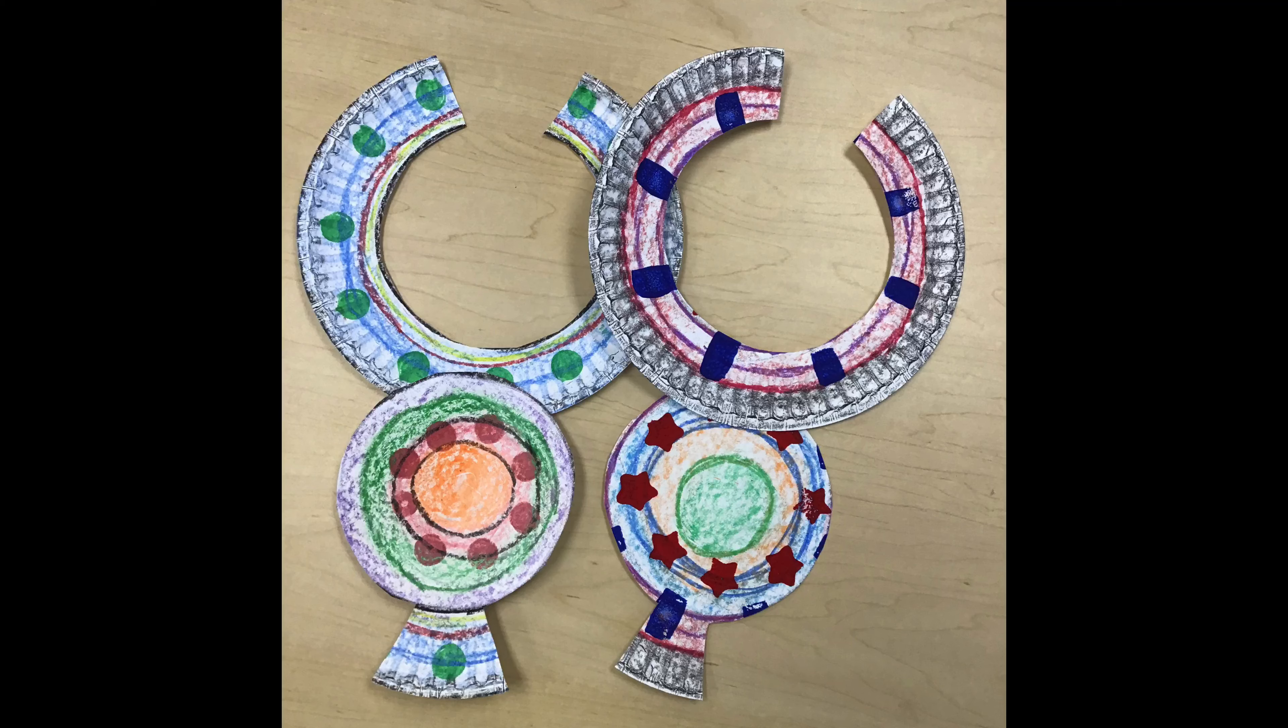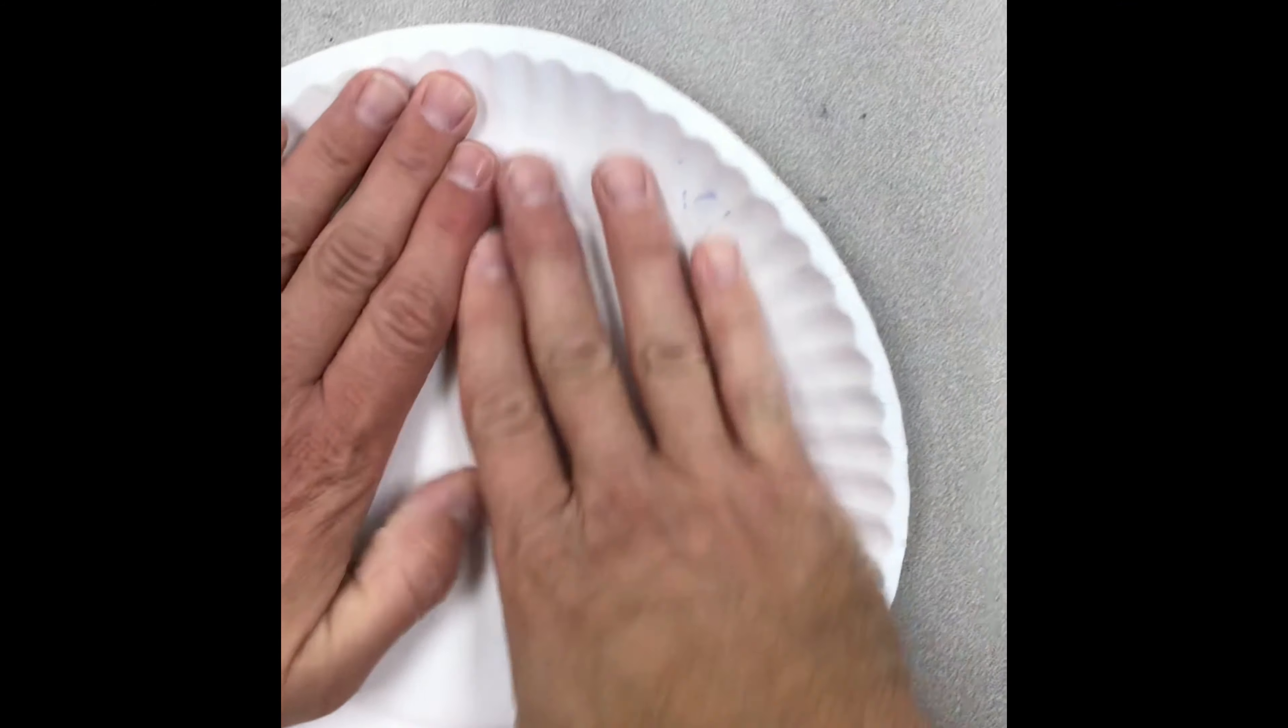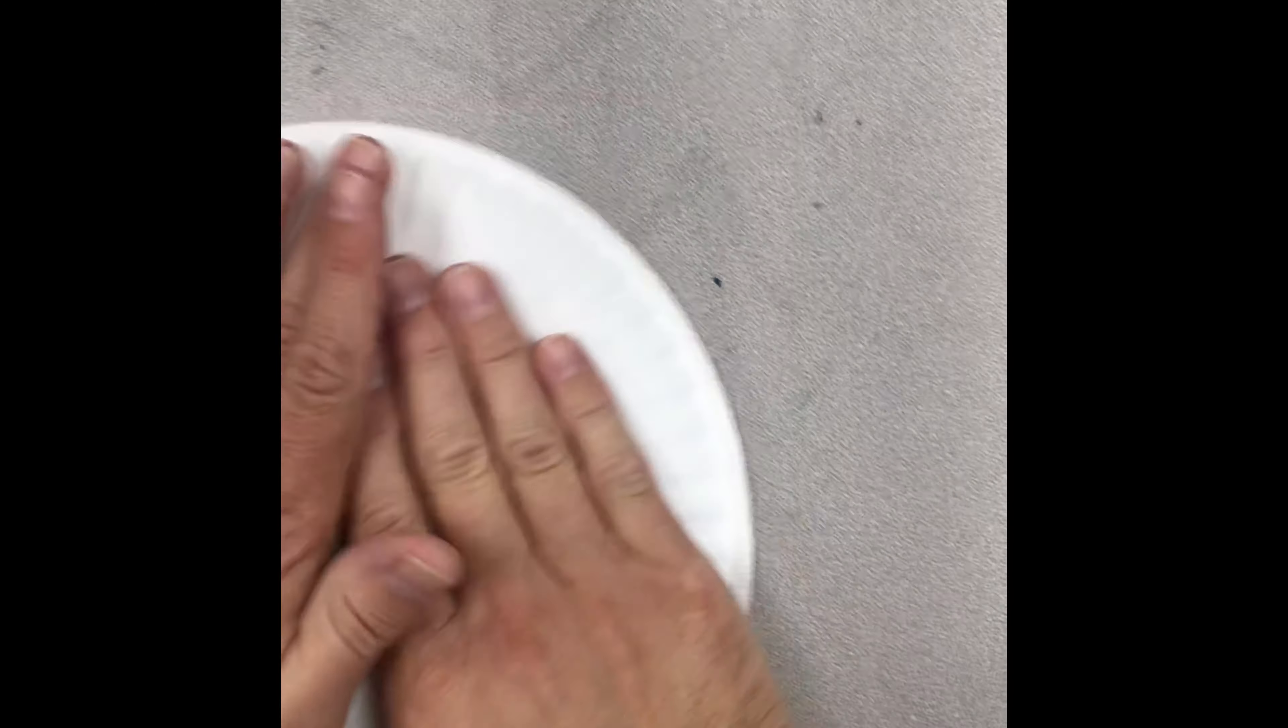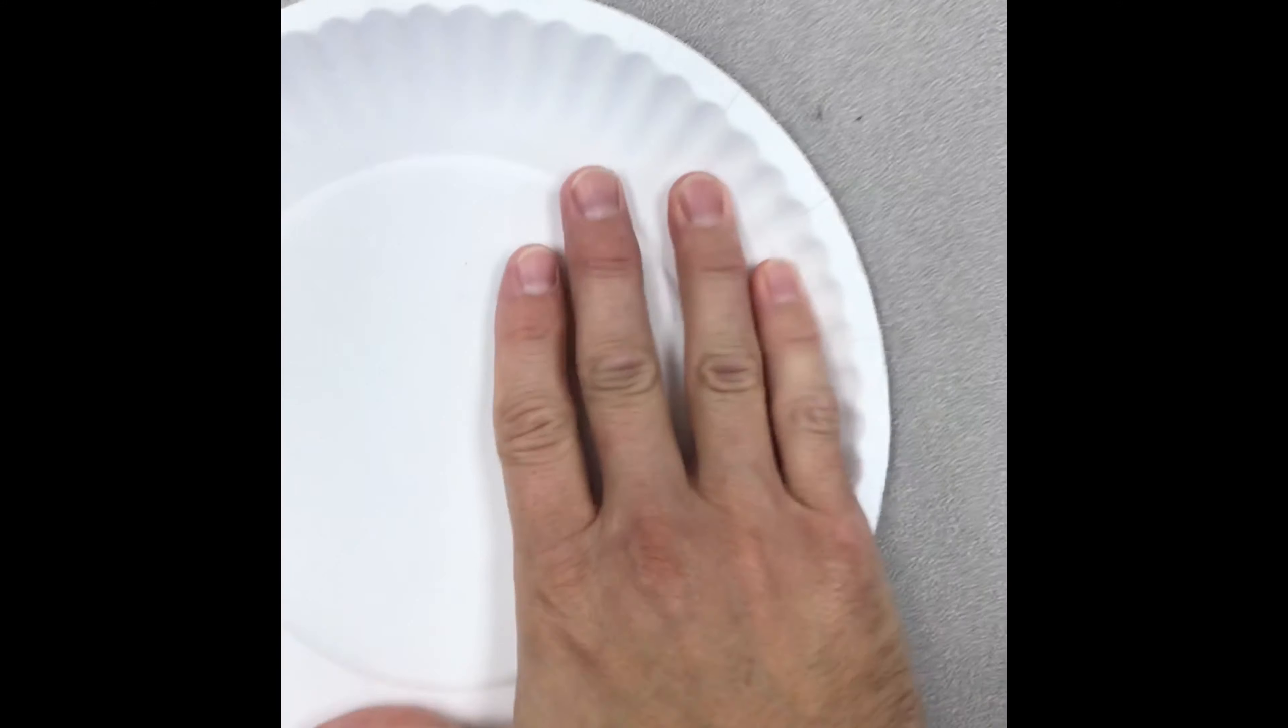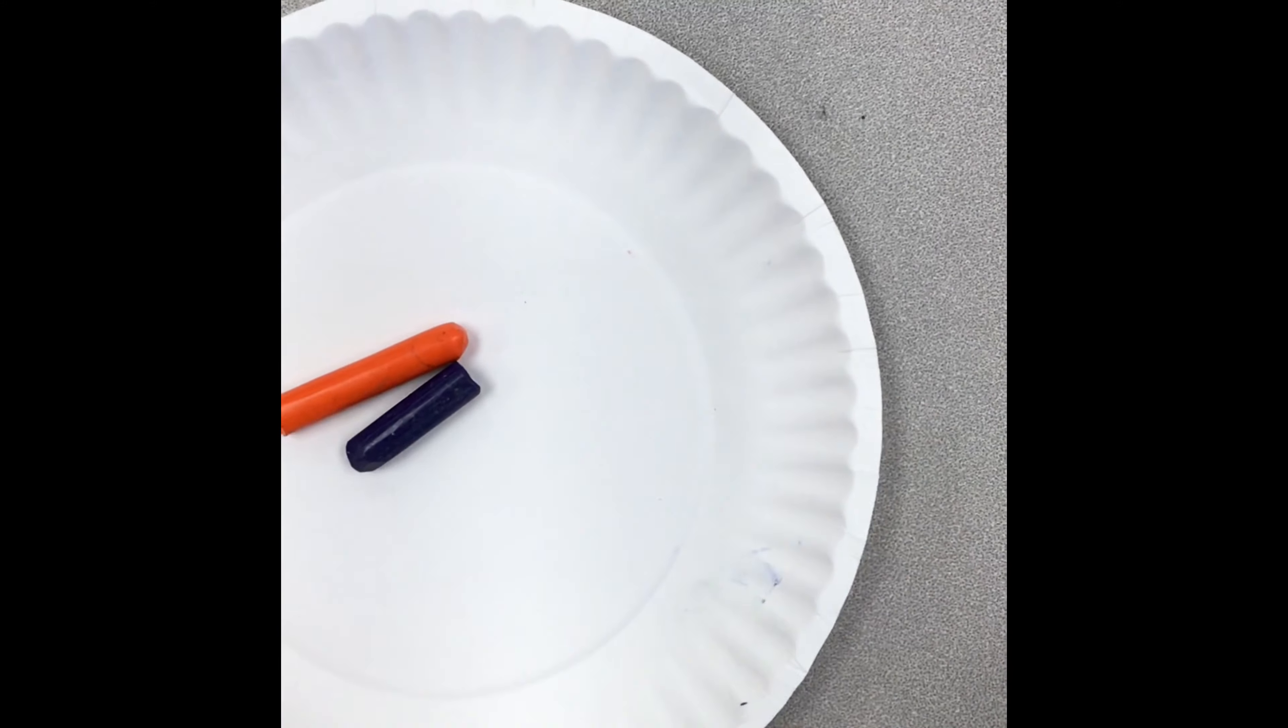To create our collar necklace today, we're going to use a paper plate. So to start off with, we'll take our paper plate and press it down flat a little bit to make it easier to color. Turn your plate back over to the front side, that's the side you eat off of.